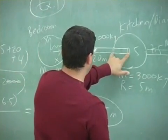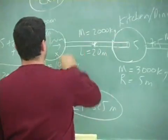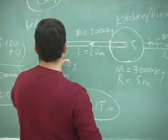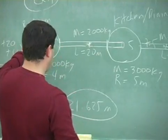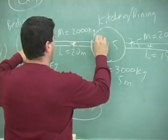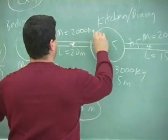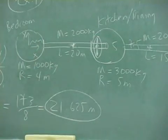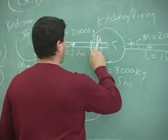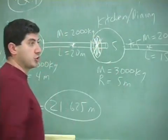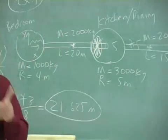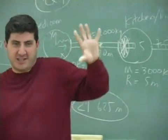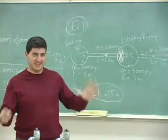This is 20 meters for the hallway, and 5 for the kitchen radius. From here to here is 15. 15 plus 4 is 19 — it's right here. That's the center of mass. It's inside the kitchen. And it's usually a good idea to put the fridge right there, so that the fridge doesn't have a lot of action going on. Put it right there.